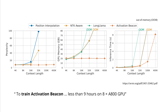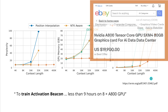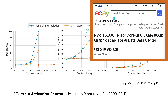The first thing I found interesting: training activation beacons takes less than nine hours on an eight times 800 GPU NVIDIA data center system. If you're not familiar with the H100, this is the Chinese analogon. As you can see on eBay, it's available for under $20,000 per single machine.